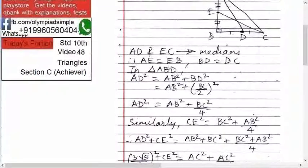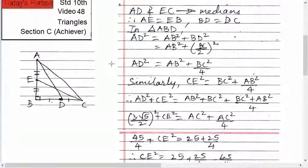Next, in triangle ABD, AD square equals AB square plus BD square.